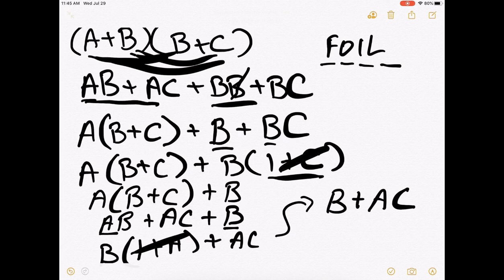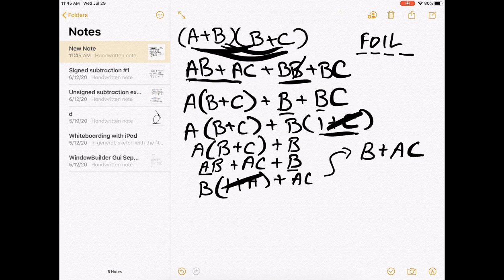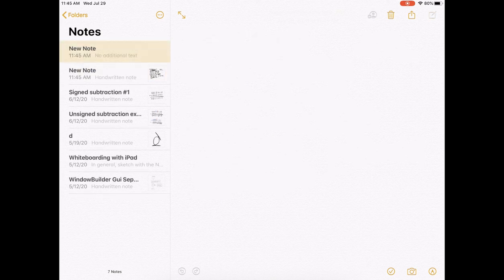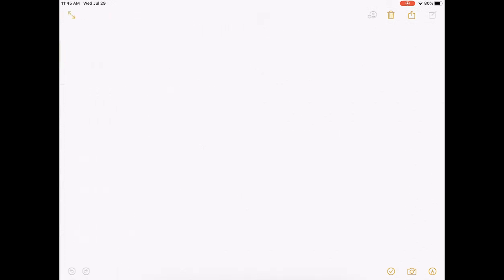All right, let's do the next one. I'm going to start a new note for that, and then we're going to have A or B quantity with a knot on it, and then B or C.